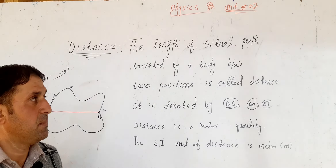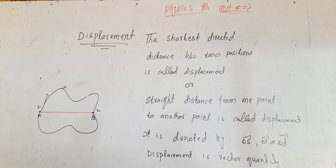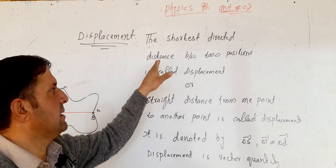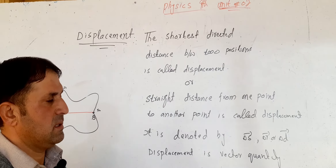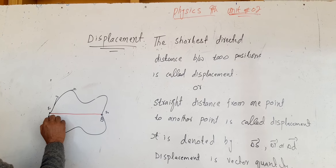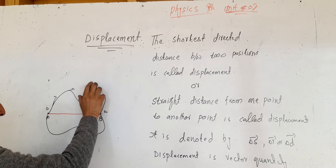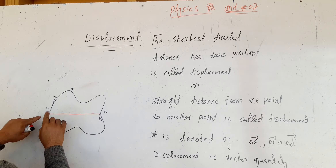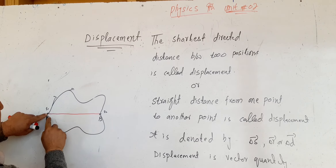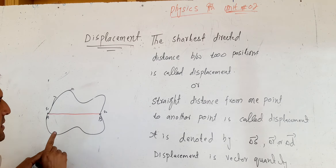The next topic is Displacement. Displacement is the shortest distance between two positions. While distance is the length of the actual path, displacement is the shortest distance in the lowest or straight direction.